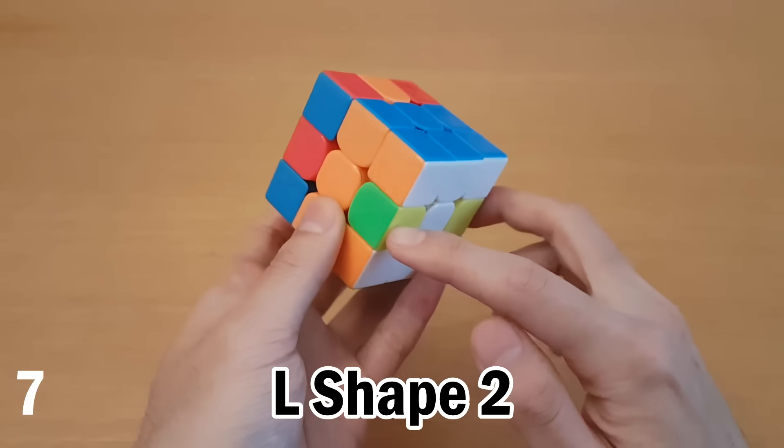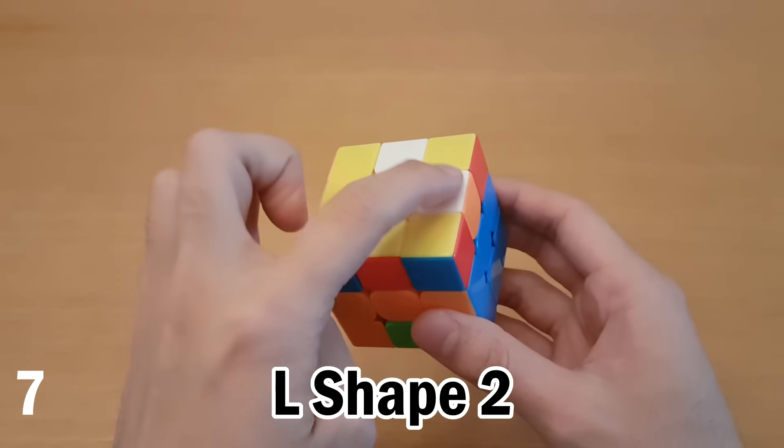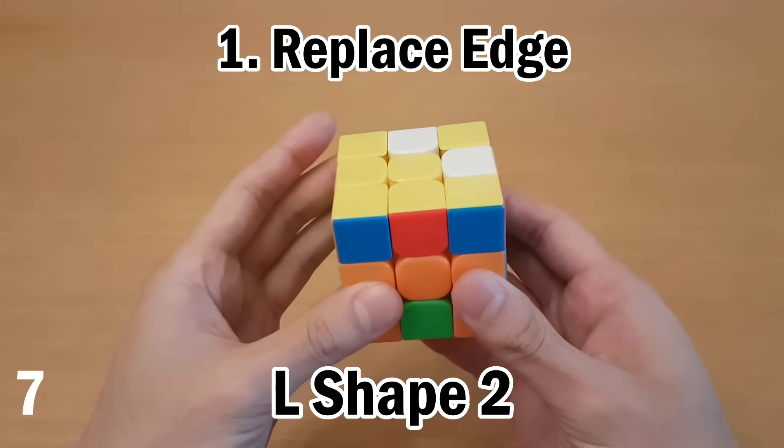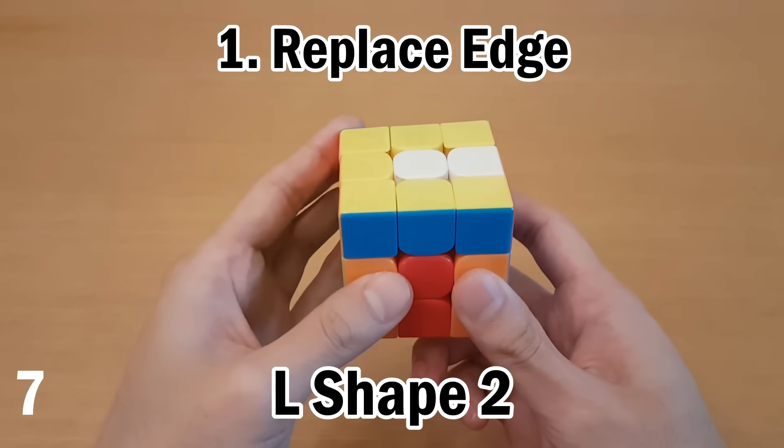Now for this case, again, we're about to do M2 to solve our left and right edges. In this case, our L is over here, and we're going to move this back edge away when we do M2. So of course, put this one at the back.